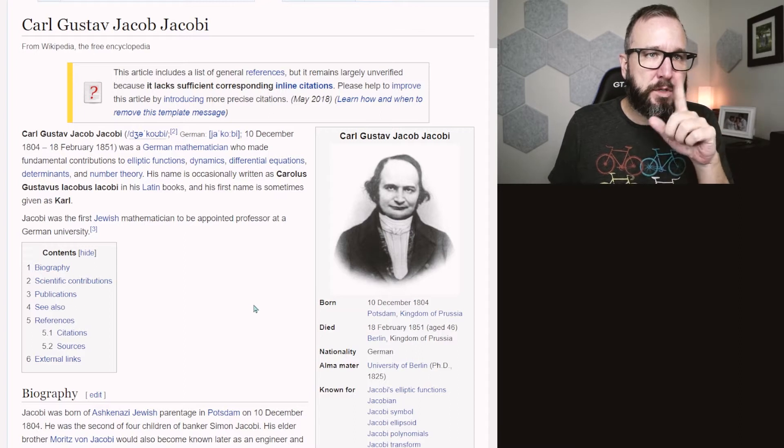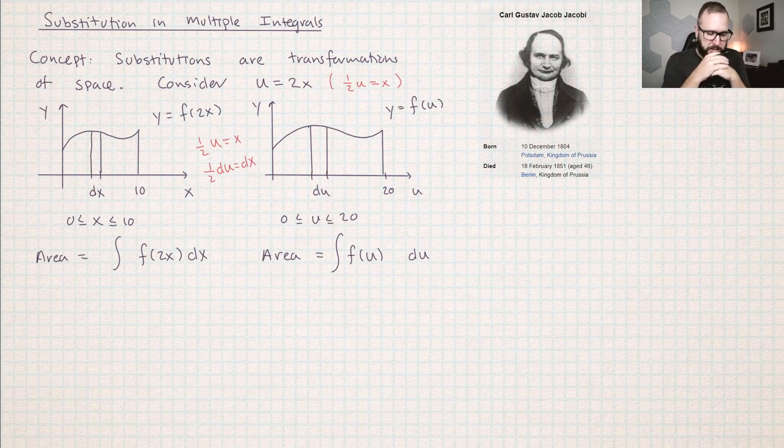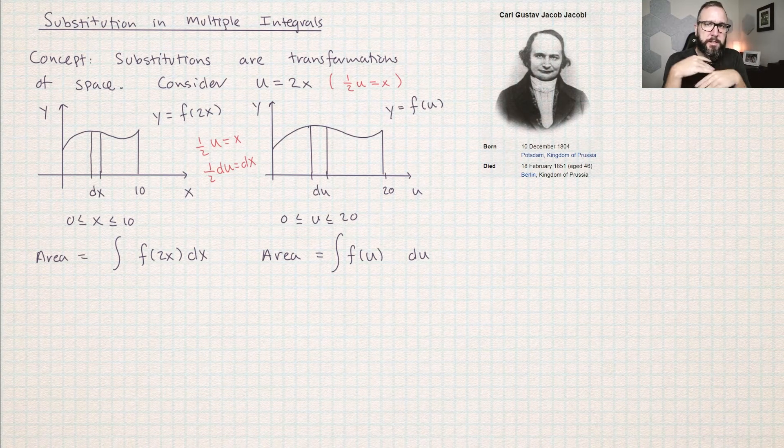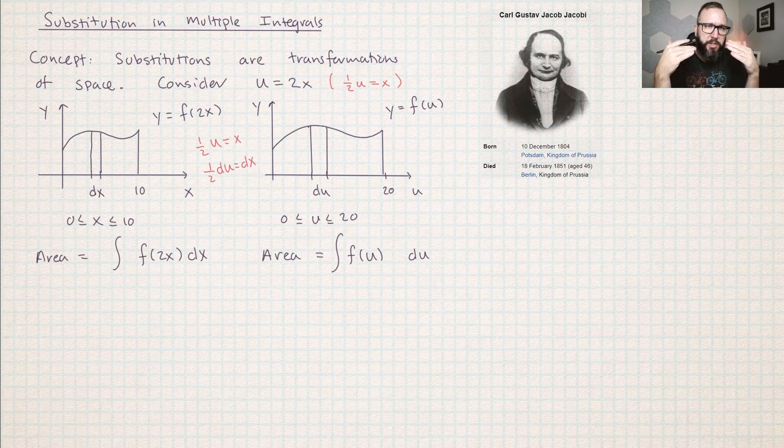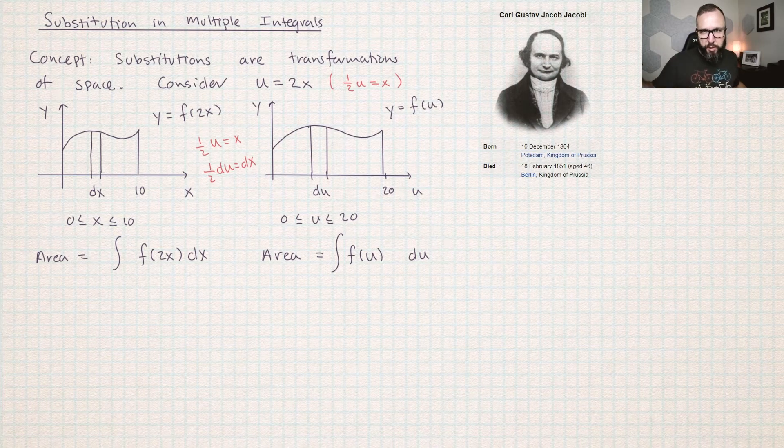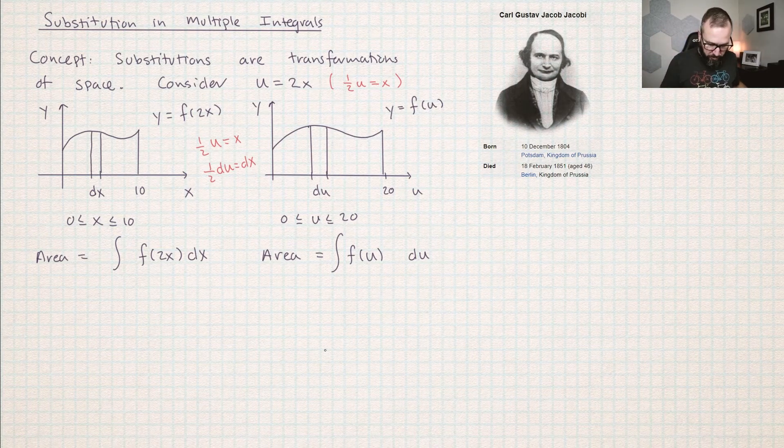He figured out how to make substitutions in multiple integrals. The key to unlocking this concept is to imagine substitutions as being transformations of space. Let's go all the way back to Calc 1. You've been doing this the whole time. Every time you've been making a u sub, this is what's been going on.